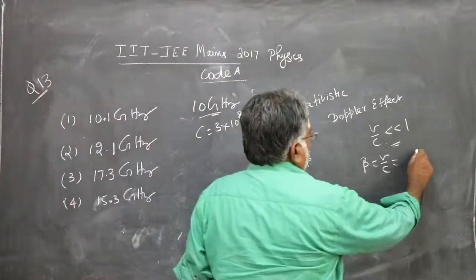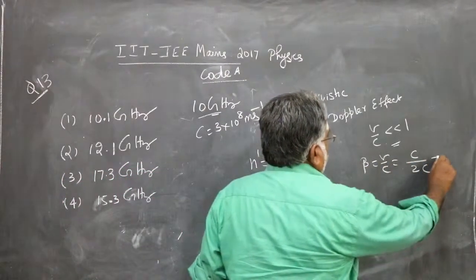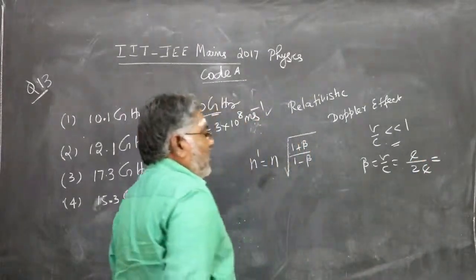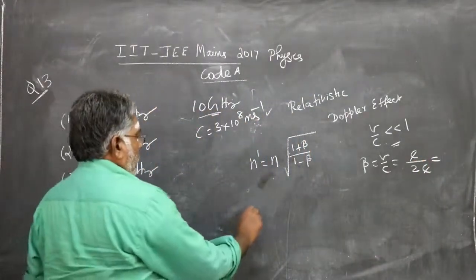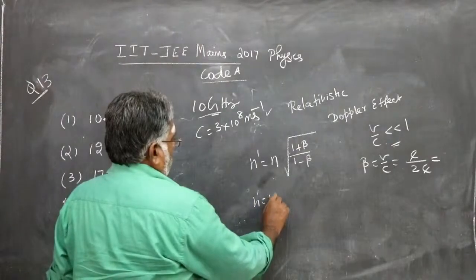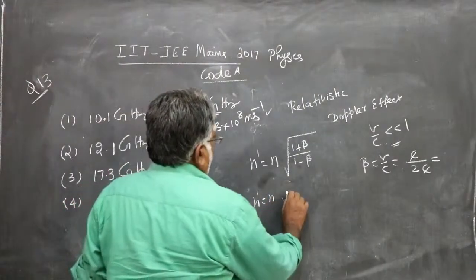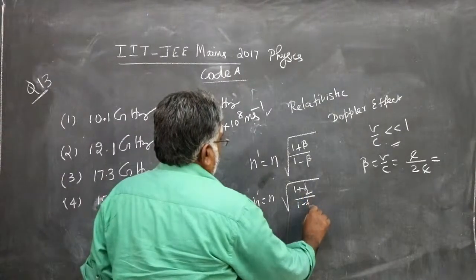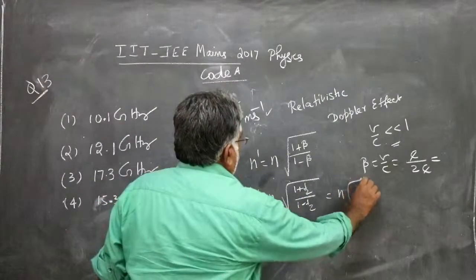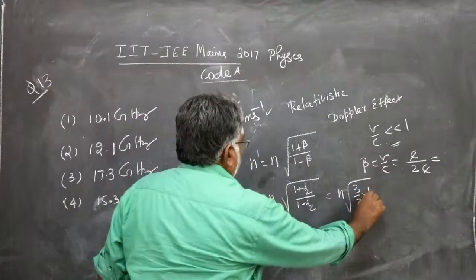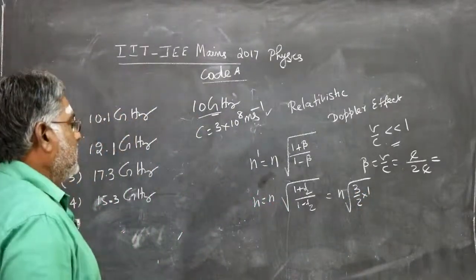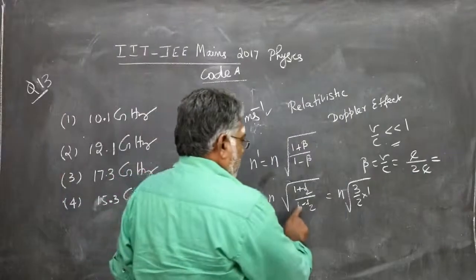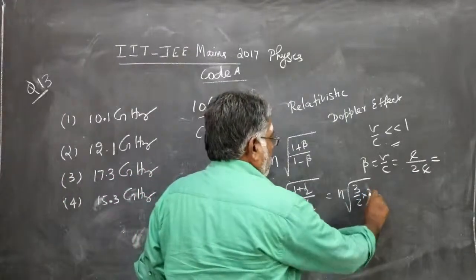n' = n × √[(1 + β)/(1 - β)] = n × √[(3/2)/(1/2)] = n × √3 × 2, that's divided by half or multiply by 2.